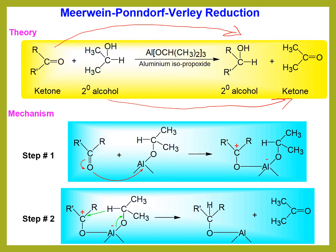After that, we want to discuss about the mechanism of the reaction. In the first step, the ketone will react with the catalyst aluminum isopropoxide. In the ketone, there is a carbonyl group, and oxygen, due to its high electronegativity, withdraws the pi electrons between carbon and oxygen. After that withdrawal, oxygen becomes negative and the carbon becomes positive.